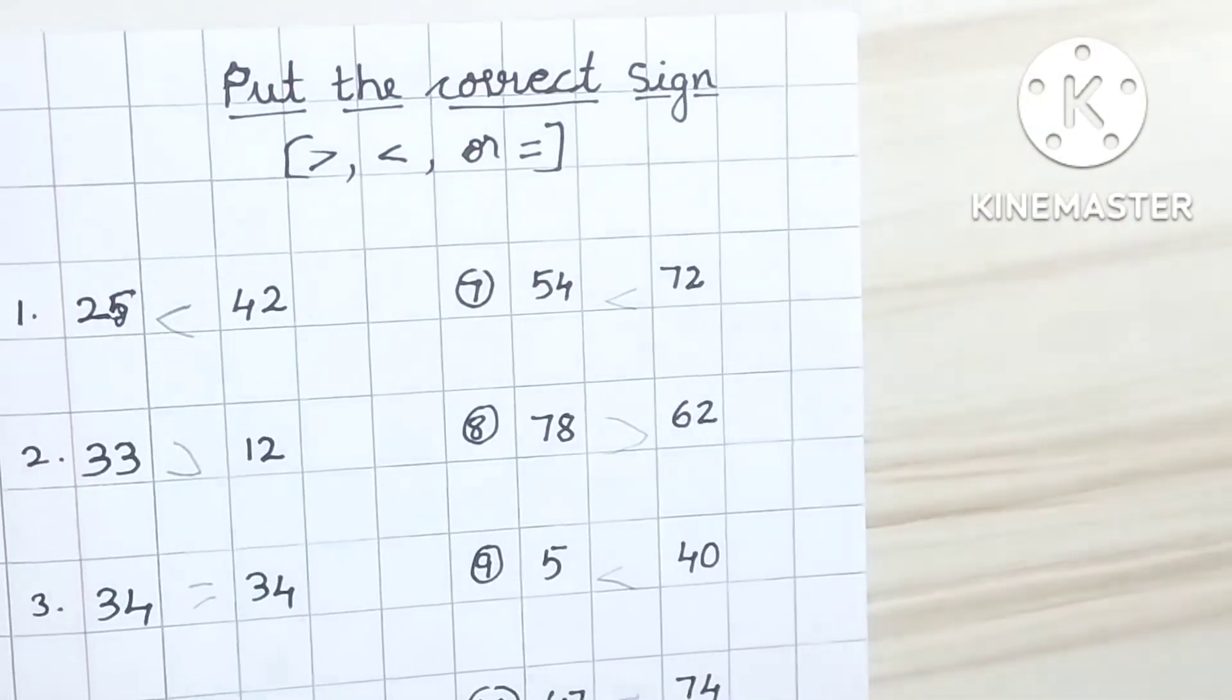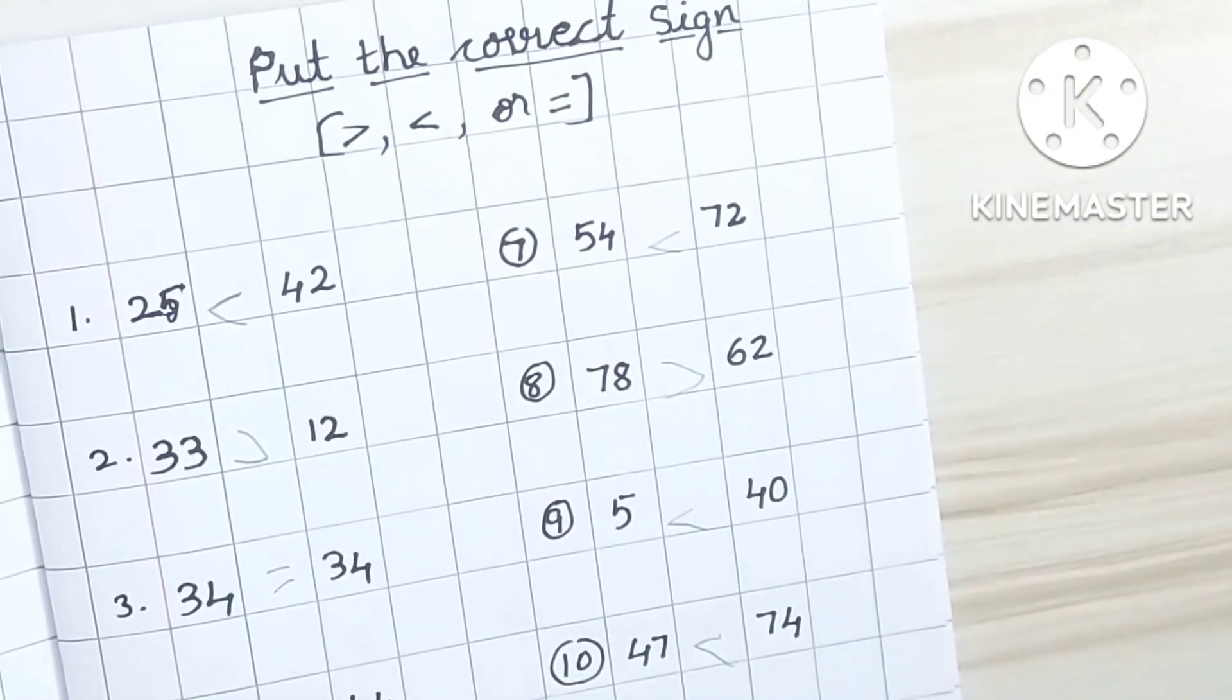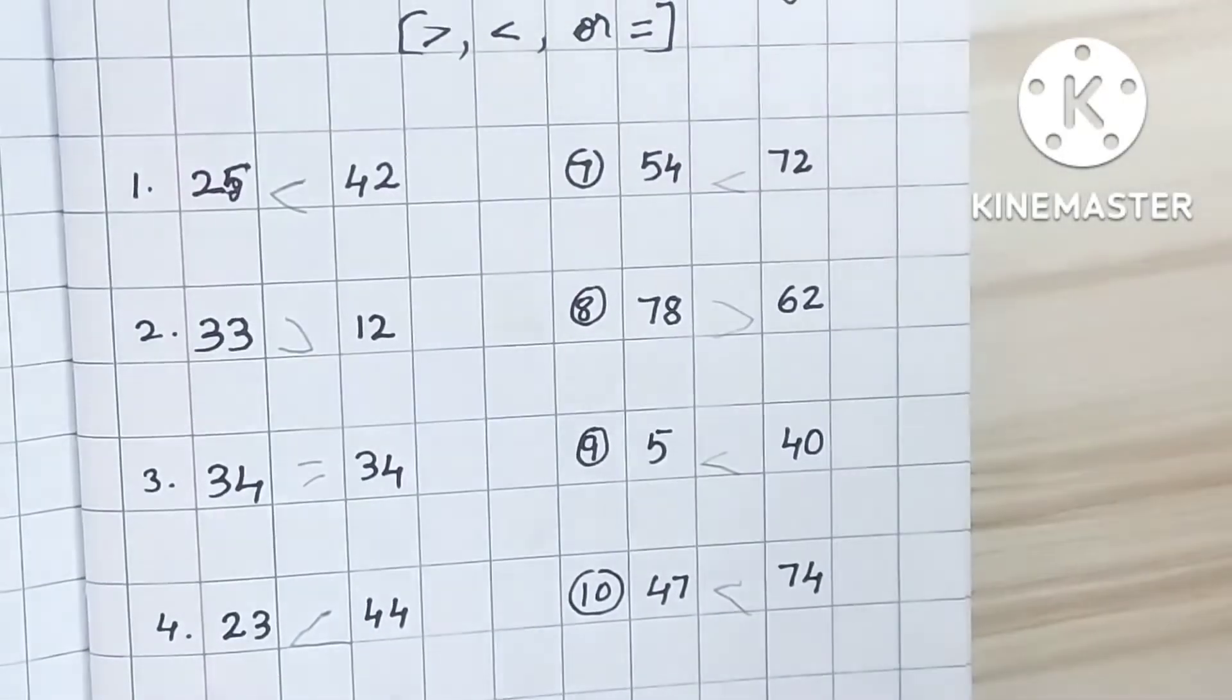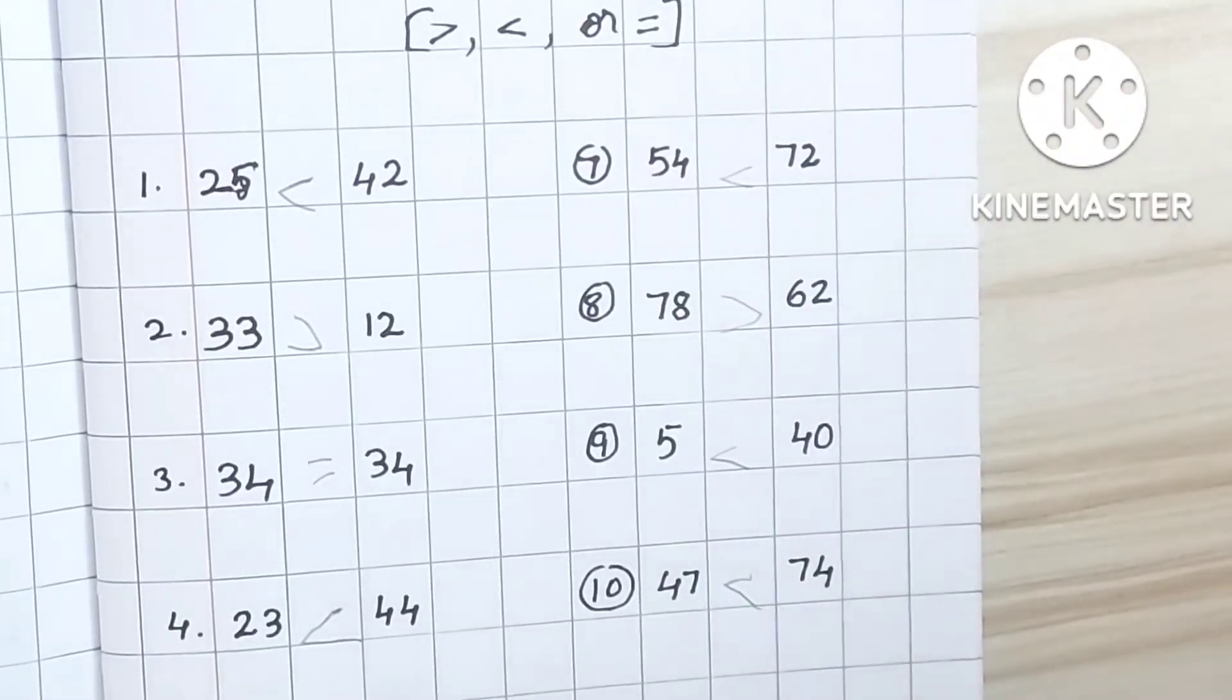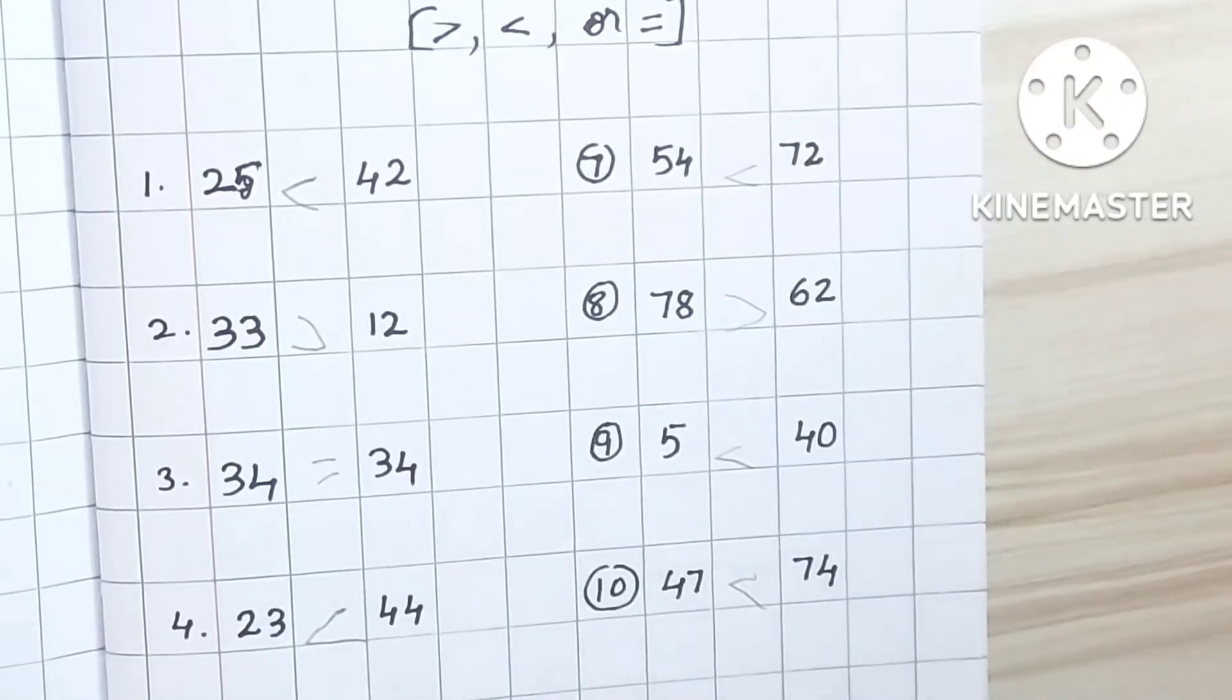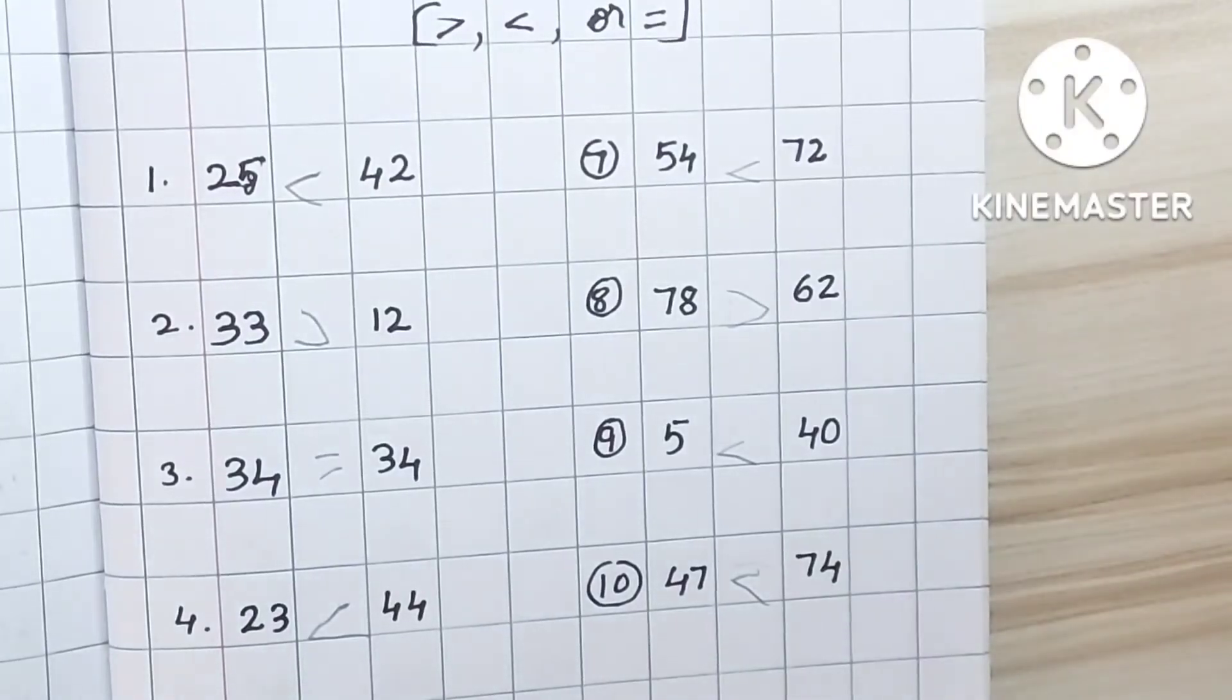So, this is the sign of a greater, smaller, and equal. Okay. Tomorrow, we will see arranging of smallest number to bigger number and bigger number to smaller number. Okay. Yes. Thank you.